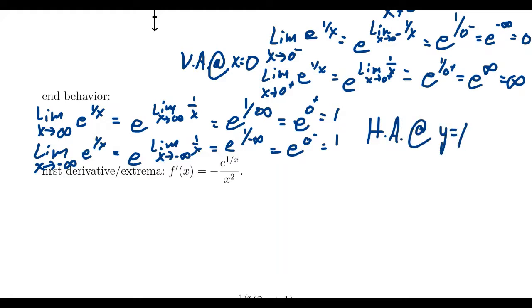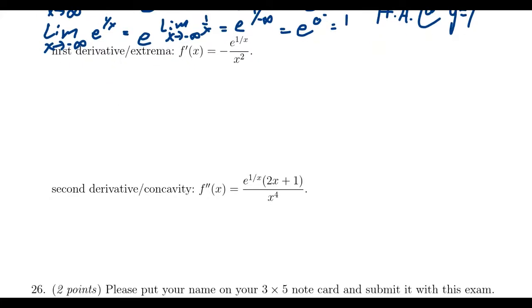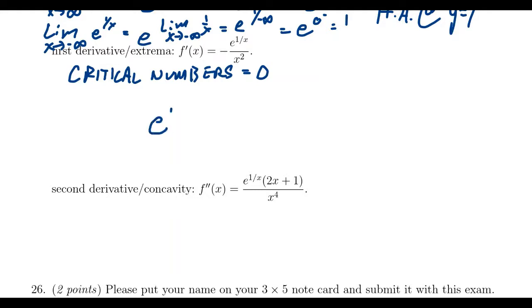Now let's investigate the first derivative, which is given to us: f prime of x equals negative e to the 1 over x, over x squared. For critical numbers, setting x equal to 0 makes the denominator go to 0, giving us a critical number at 0. If we try to make the numerator go to 0, no power of e can equal 0. So x equals 0 is our only critical number.